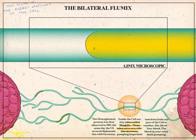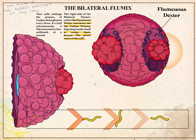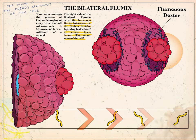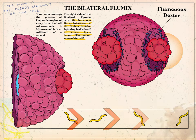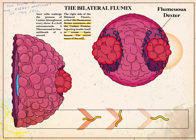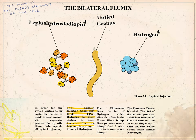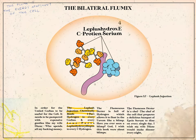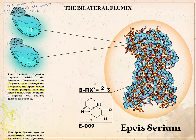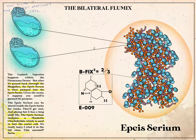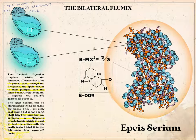Once through the blepgella, flumquous dexter — the right side of the bilateral flummox — uses the untied cebus protein to create EPCS serum using a process called the Leplush injection. By combining two parts hydrogen with every four parts Leplush hydroxyodiapin from the cebus protein, we're left with a sugary gum-like syrup called EPCS serum, which is pumped through the blepgellin into the two EPCS sacks.